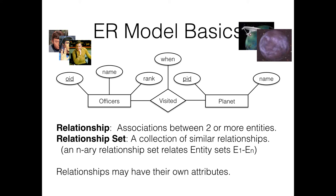Relationships can also have their own attributes. In an entity-relationship diagram, you represent entities as squares and relationships as diamonds. The diamond can have its own attribute — for example, Kirk might have visited Vulcan many times, so the visited relationship also has an attribute indicating when the visit occurred.